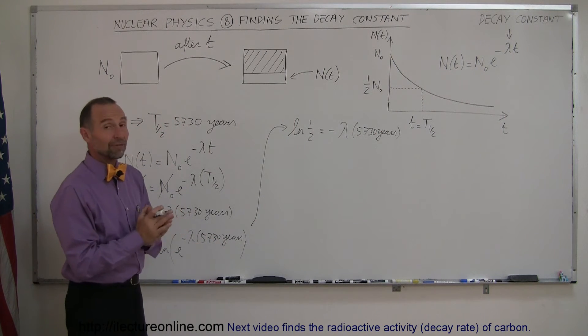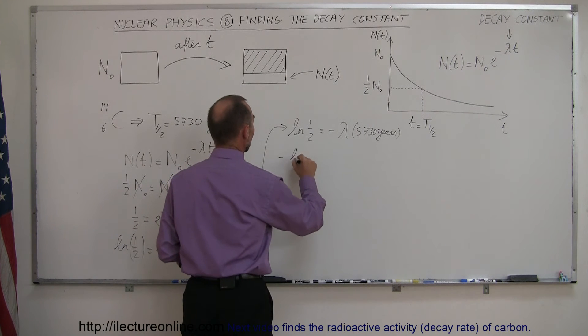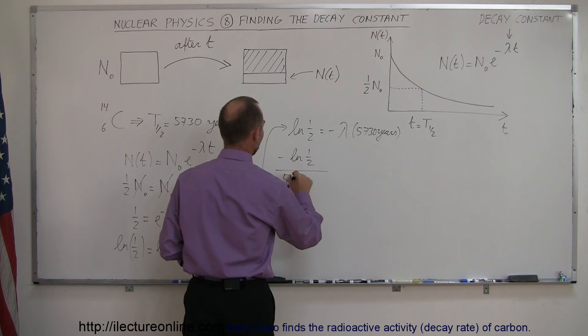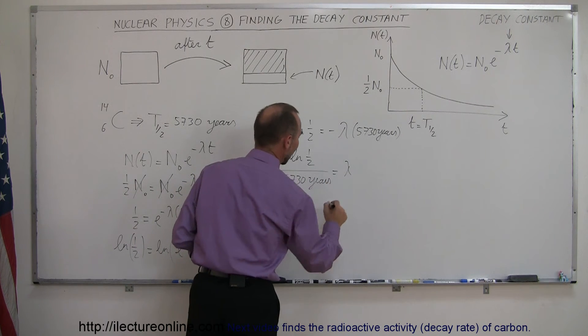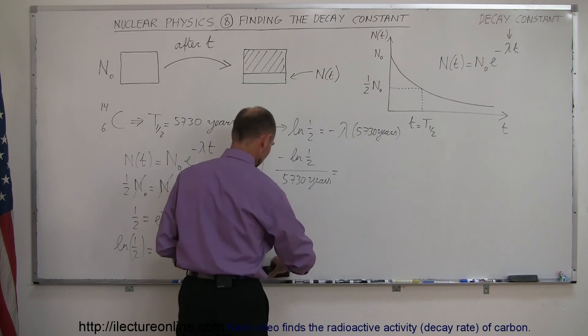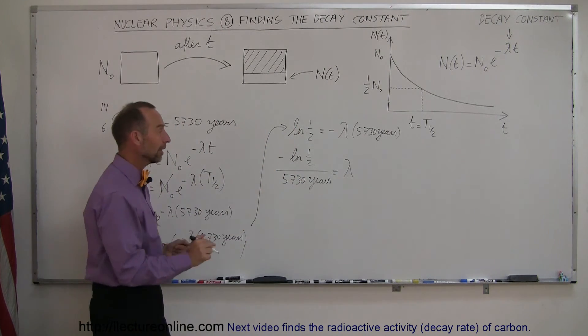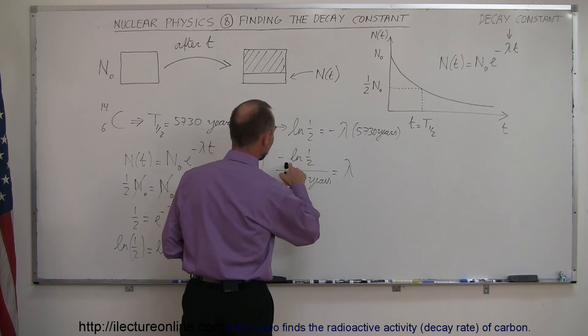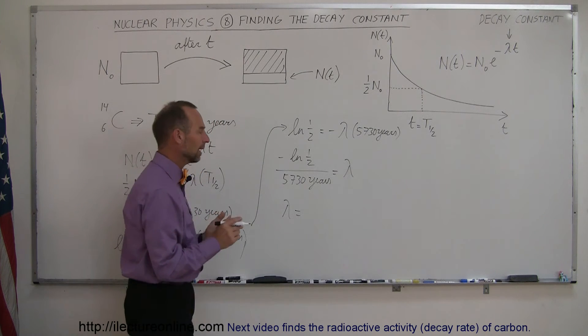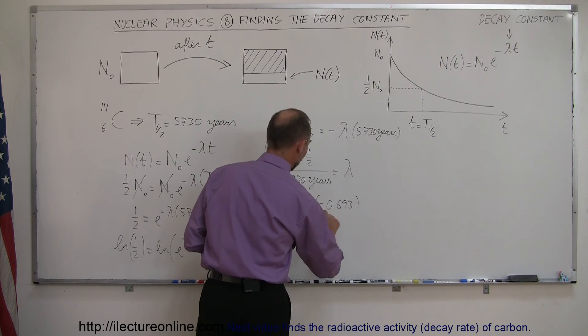So then if we divide both sides by 5,730 years and divide by negative sign, we get minus the natural log of one-half divided by 5,730 years is equal to the positive lambda. That doesn't kind of look like a lambda. Let me rewrite that. So there we go. And of course, turn the equation around and solve it for the natural log of one-half. We get lambda is equal to, and you find out that the natural log of one-half is equal to a minus 0.693 divided by 5,730 years.